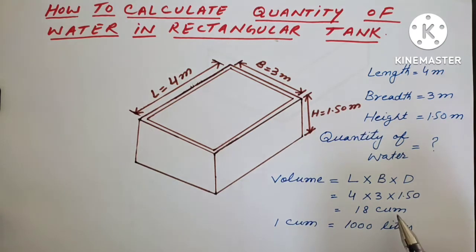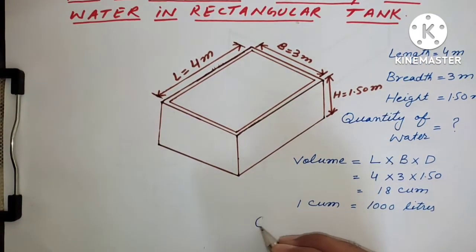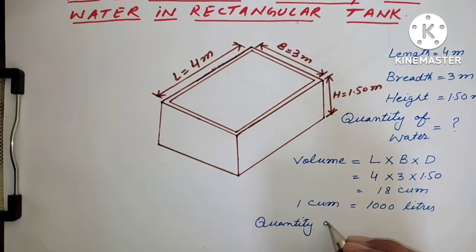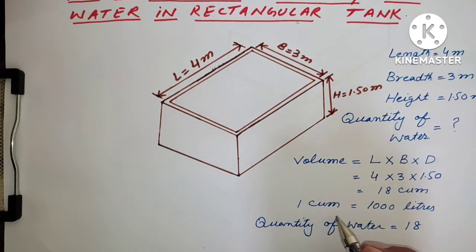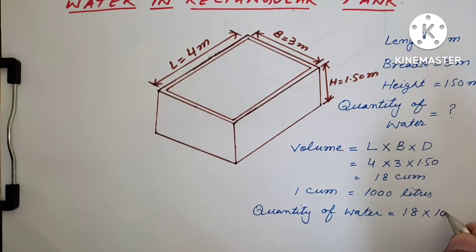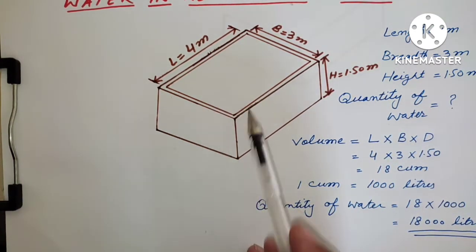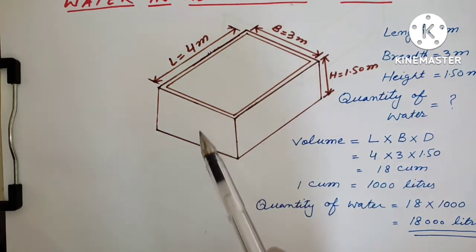We have a total of 18 cubic meters. We will multiply 18 by 1,000 to get the quantity of water. So the total quantity of water this tank will hold is 18,000 liters.